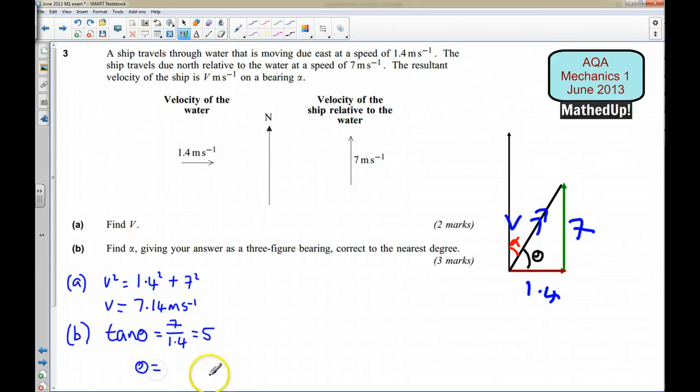So using my calculator, I can decide that theta is going to be the inverse tan of 5, and that works out to be 78.7 degrees.